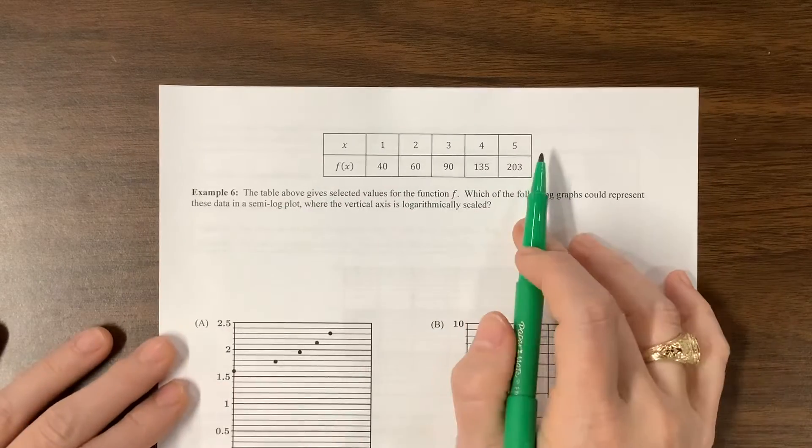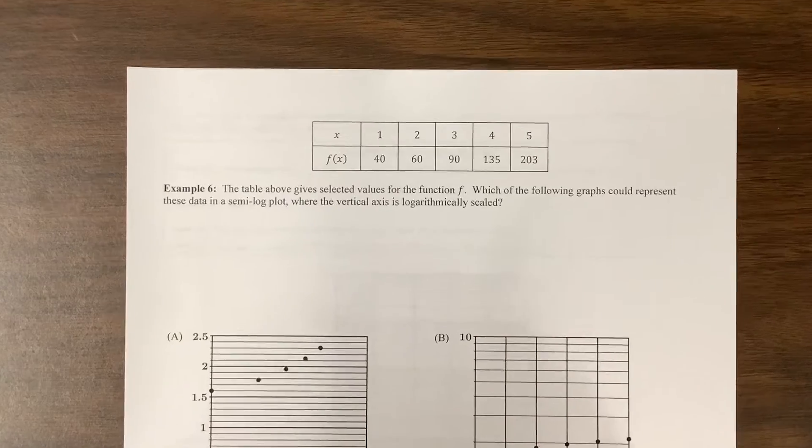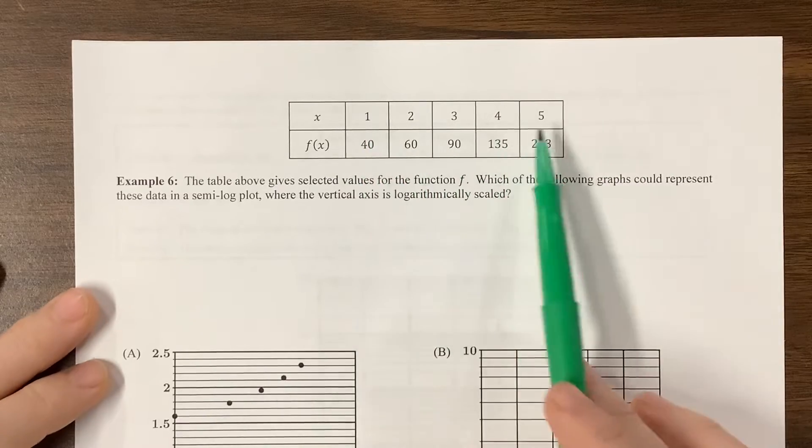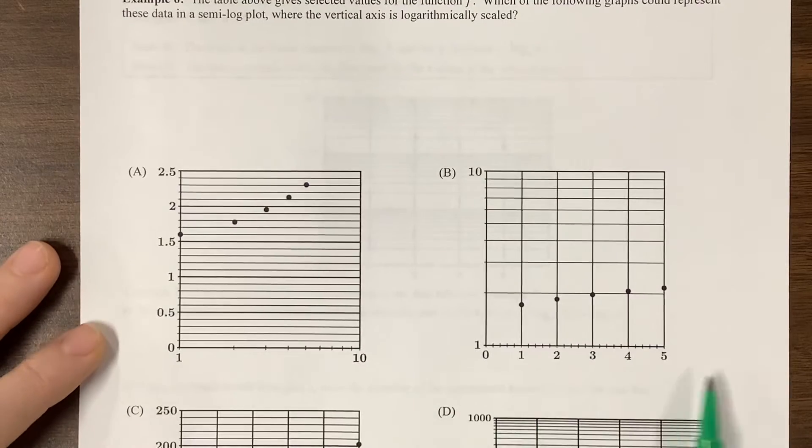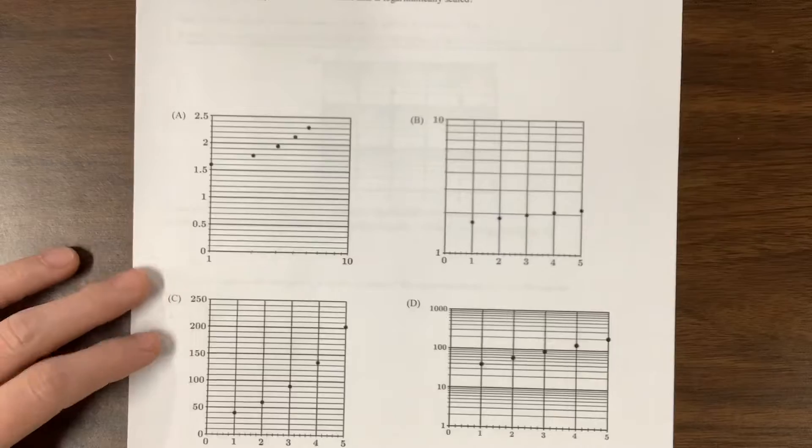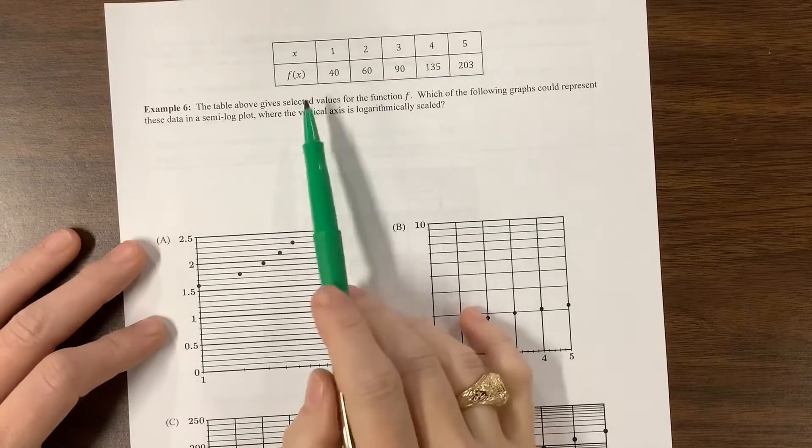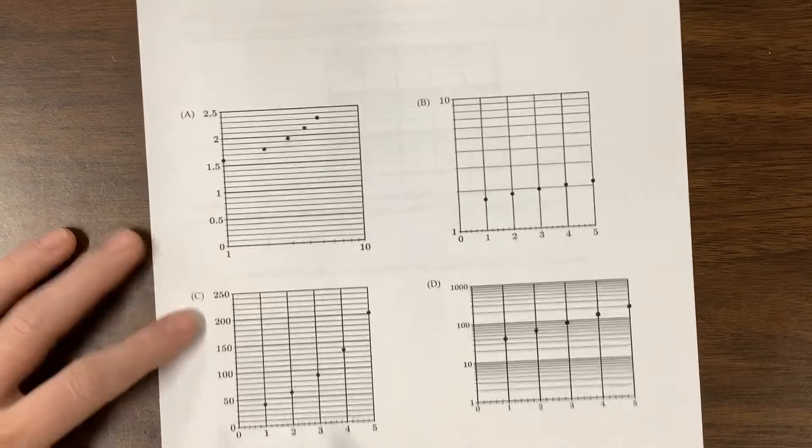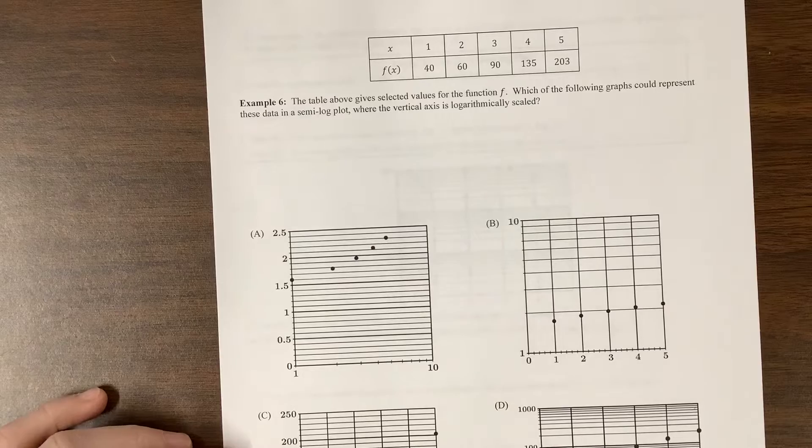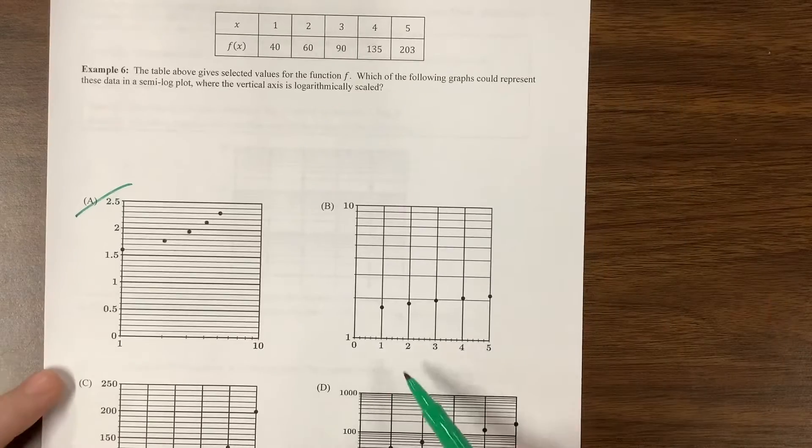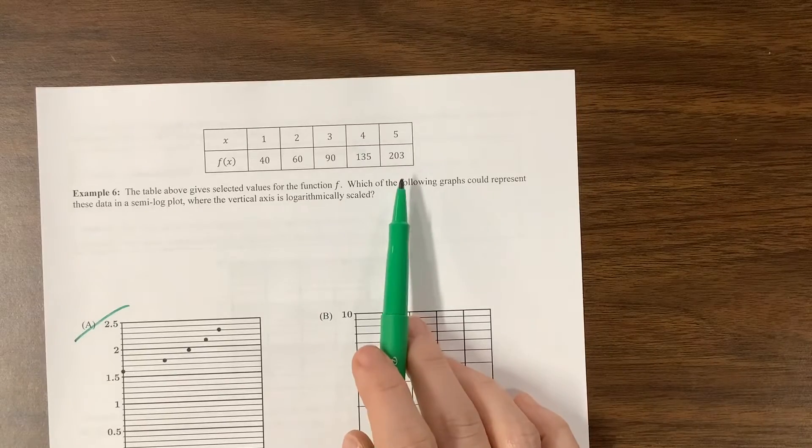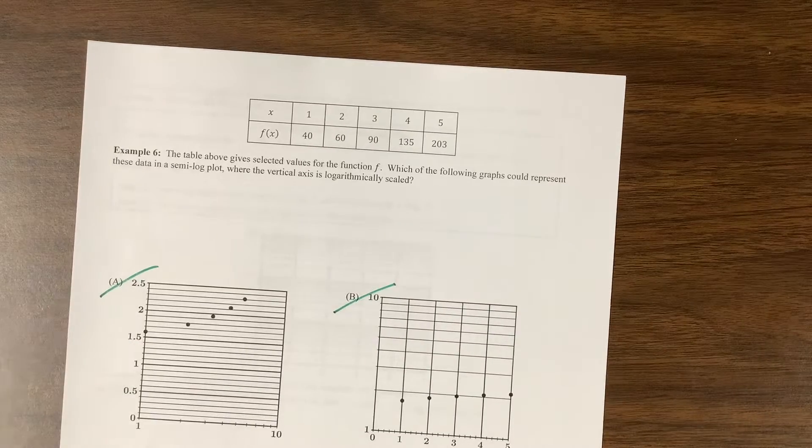Okay, the next one, they're saying, here's this set of data, and now which graph could correspond to that? Well, when I look at this, I've got 1, 2, 3, 4, 5. Okay, so 1 to 10, that might be right. I don't know, 1 through 5, 1 through 5, 1 through 5. So far, those are all fine as far as the x values go. So the y values, I have, well, notice, okay, so on this one, they're being scaled linearly. Well, that's not a semi-log plot, so that takes that one out.